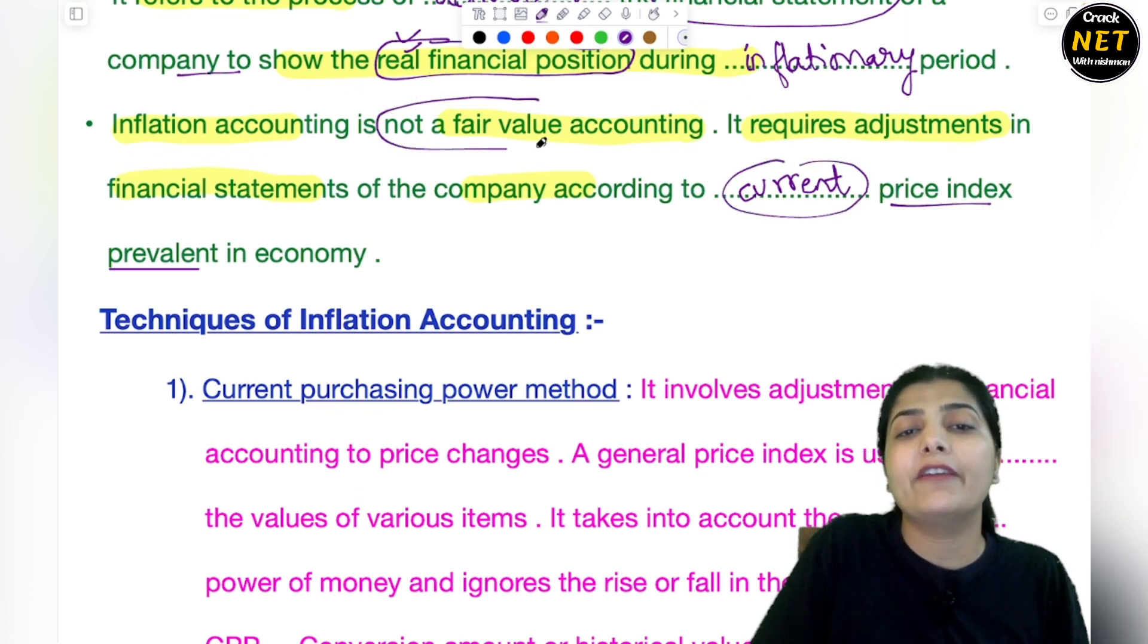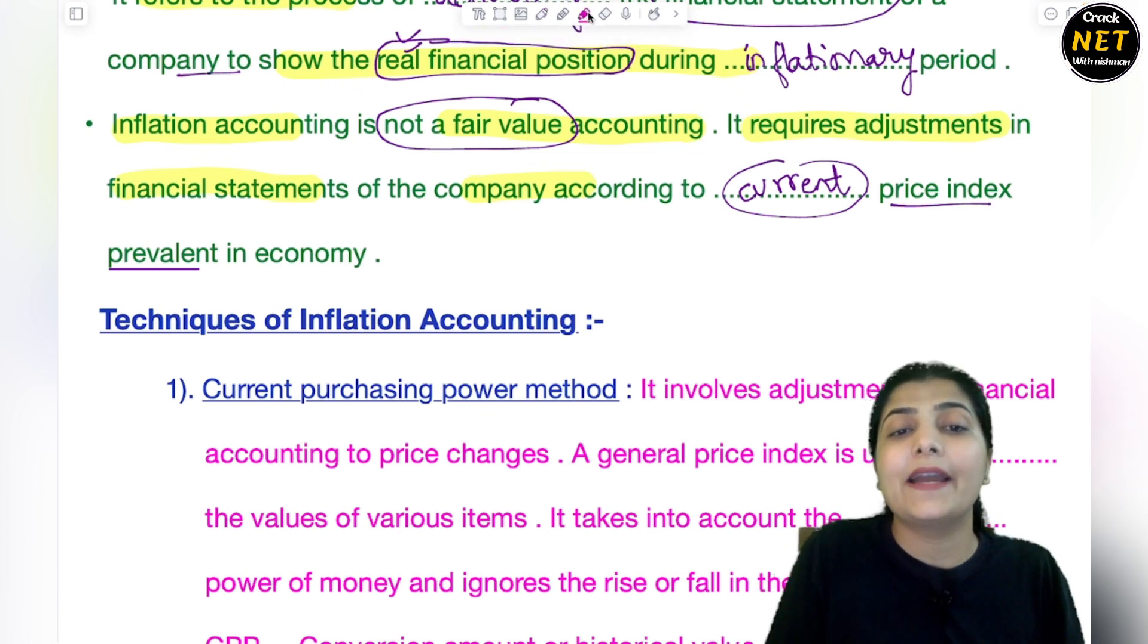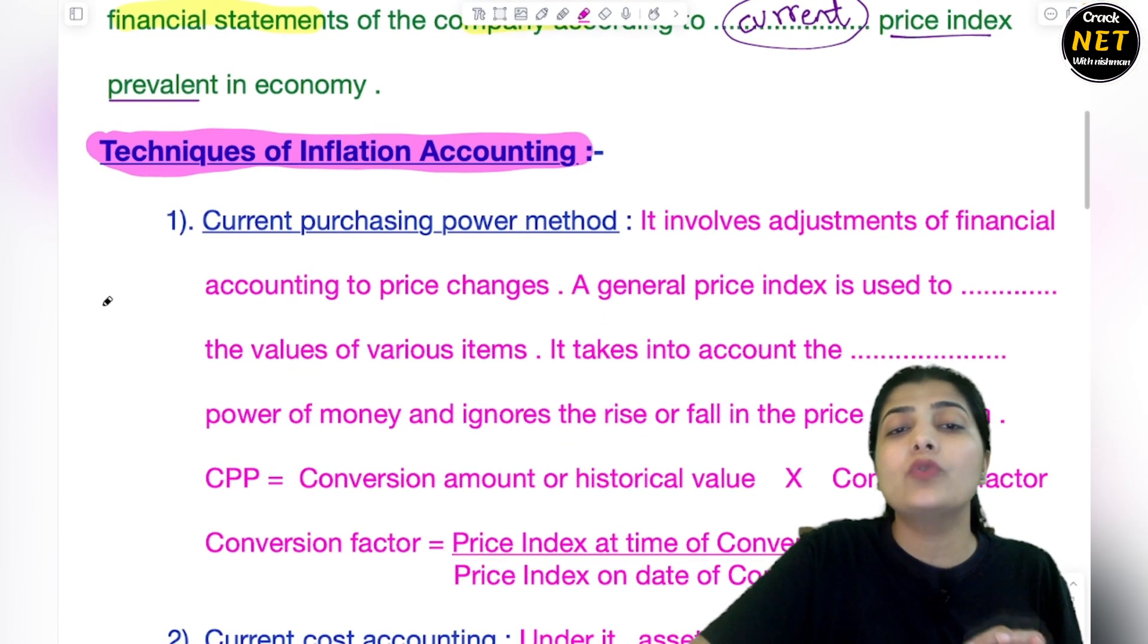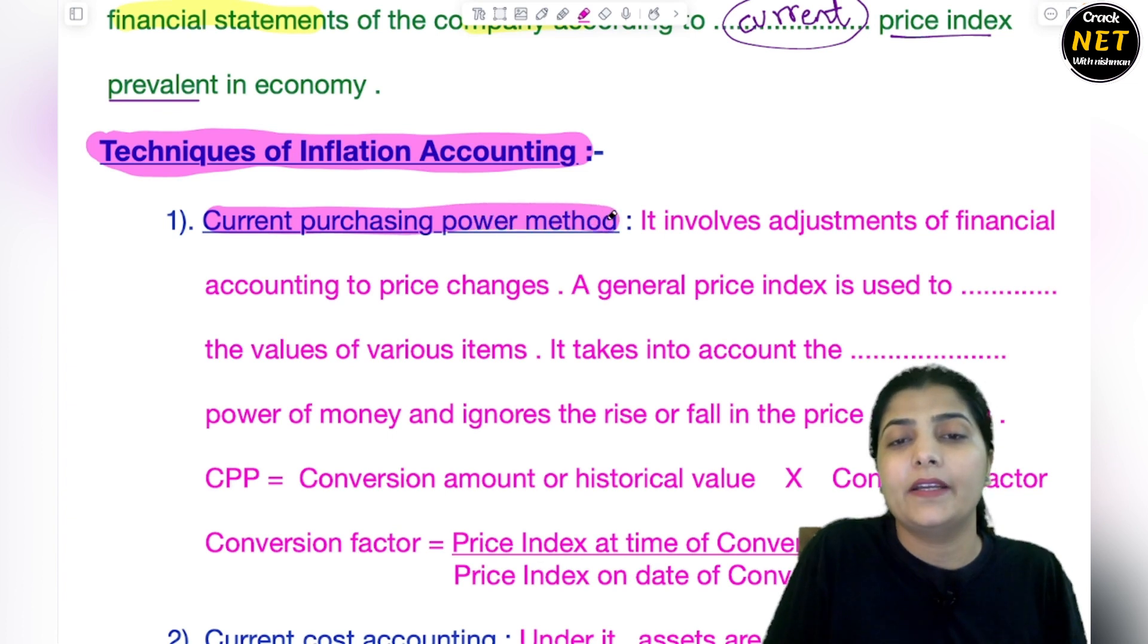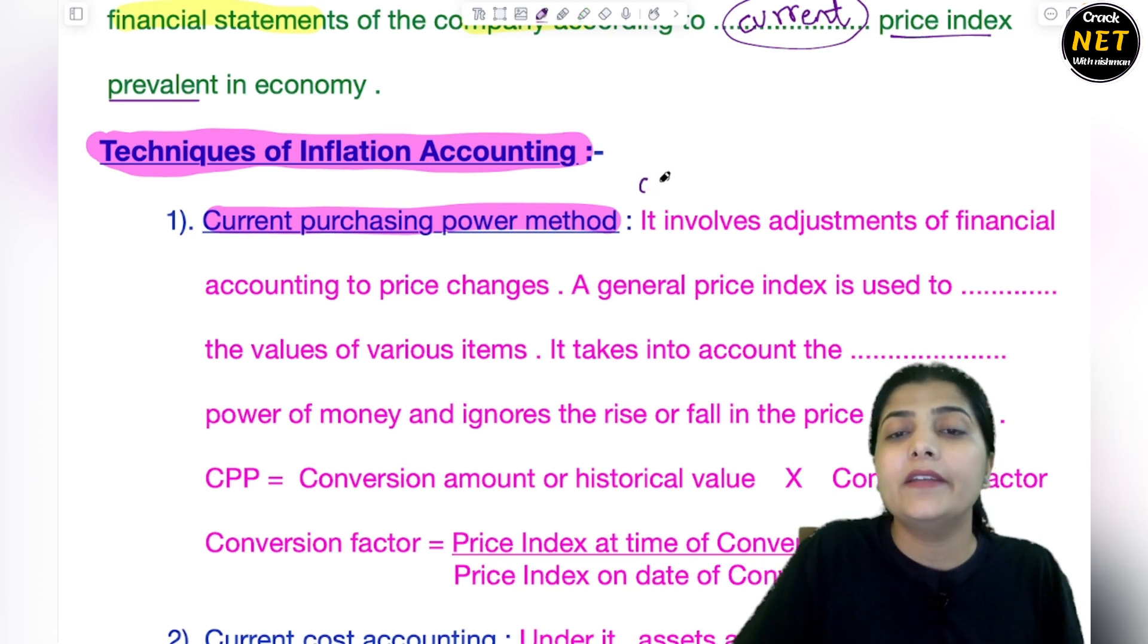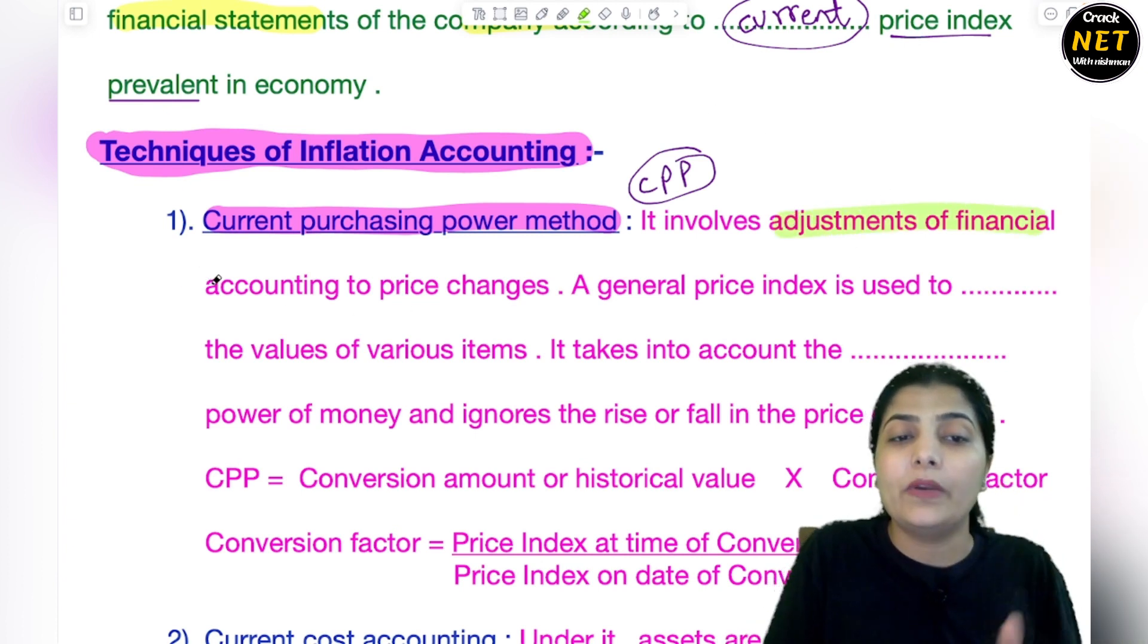Now coming to the next important topic of today's session - that is Techniques of Inflation Accounting. What techniques do you use in inflation accounting? The most usable technique and most important method that is mostly prevalent is your Current Purchasing Power method. Current Purchasing Power method, students, is mostly used by different companies for inflation accounting. So what is this Current Purchasing Power method? You can also write it as CPP, okay, Current Purchasing Power method.